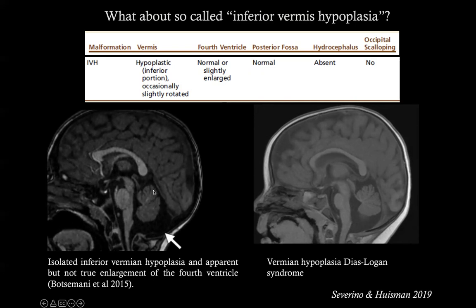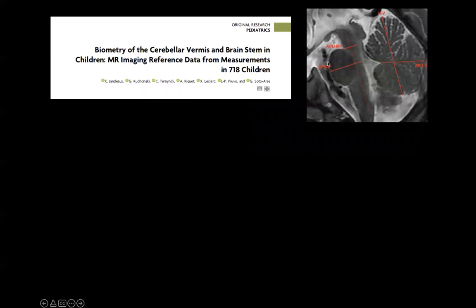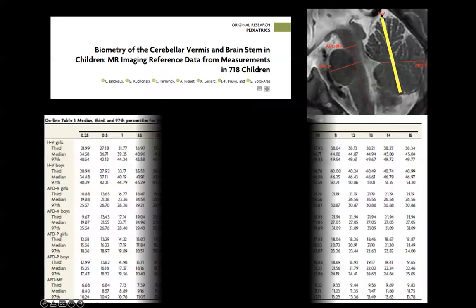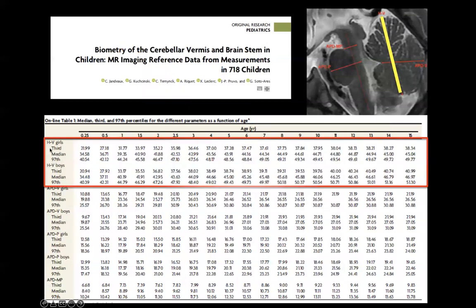Vermian hypoplasia can be subtle and difficult to detect visually. We can sometimes measure it. There is a paper by Professor Sotiriadis showing that the height of the vermis is very important among several measurements, with different reference values for boys and girls by age. So if you have a doubt, measure it.